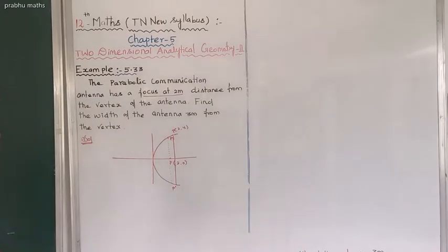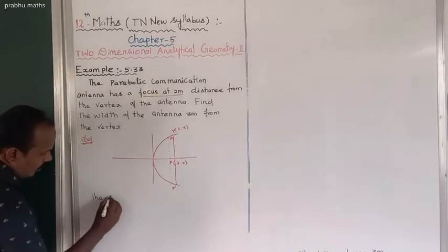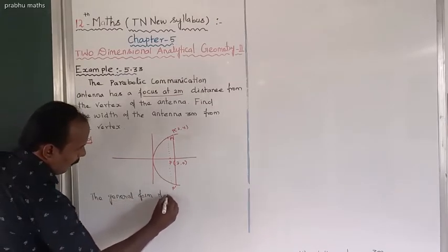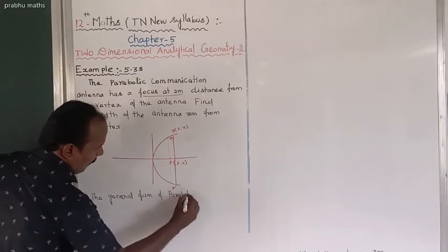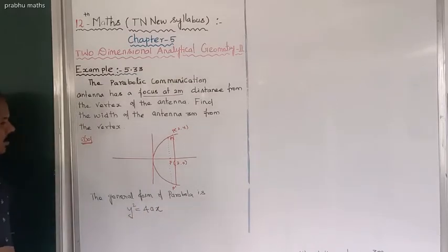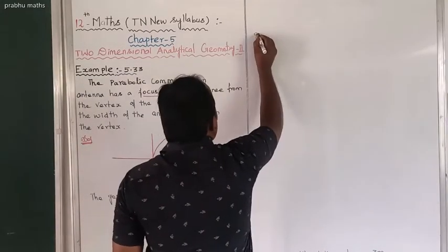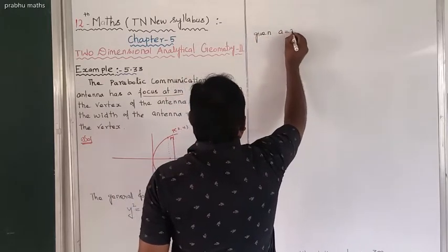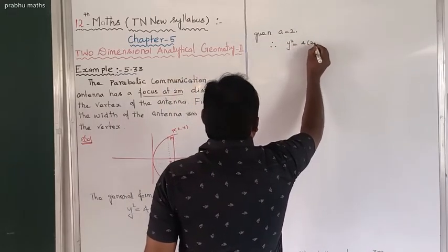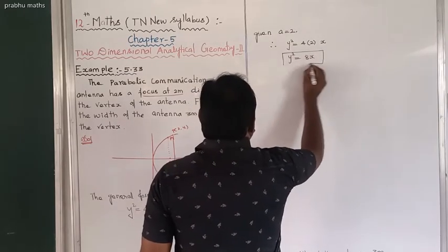The general form of a parabola is y² = 4ax. Given that a equals 2, therefore substituting: y² = 4 × 2 × x, which gives us y² = 8x.